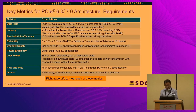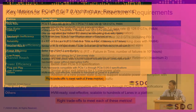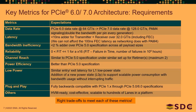Now let's look into 6.0 and 7.0. As I said, both are FLIT mode. Every few generations we may change the encoding mechanism — not because we like to, but because we are forced to in order to continue with this cadence of delivering the bandwidth.